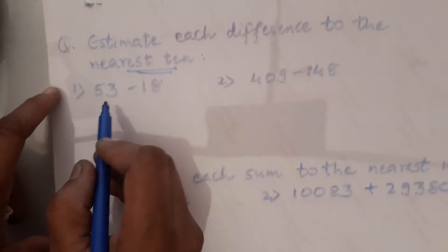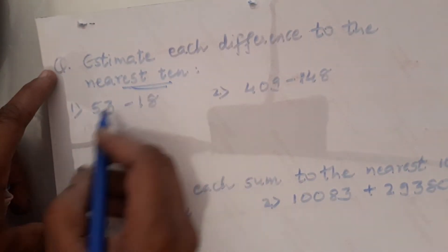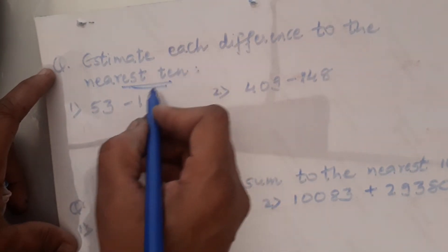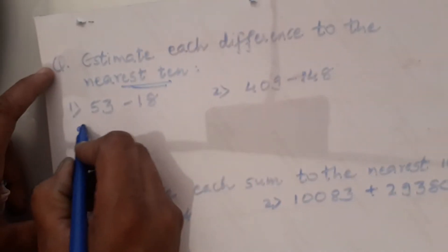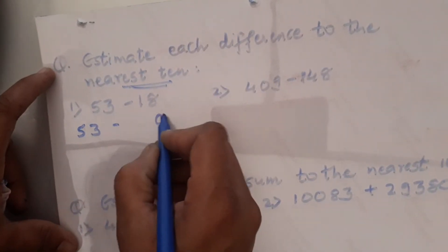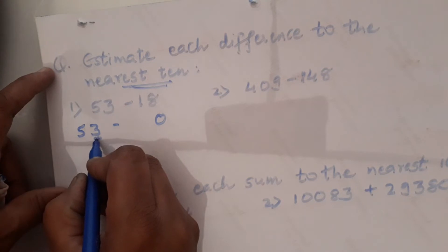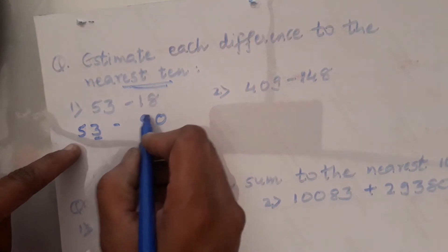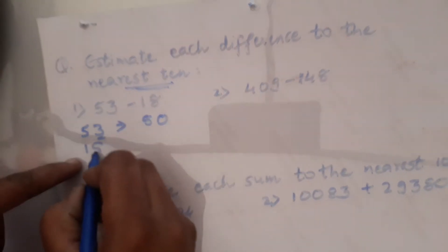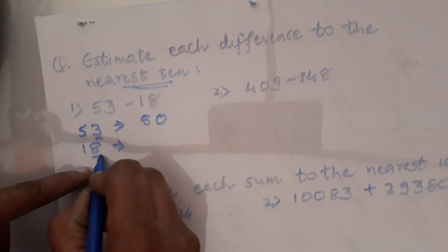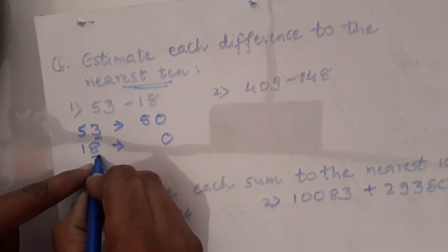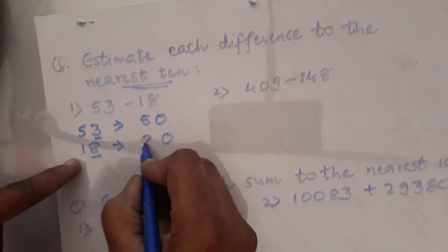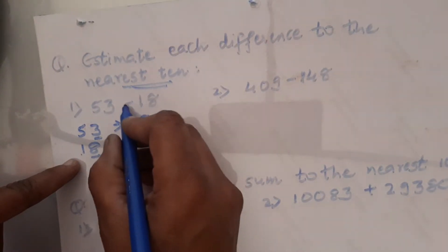Let us go with the first example — nearest tens. 53 rounded off to the nearest tens: in tens there is 1 zero, so 1 digit is underlined. The underlined digit must be greater than or equal to 5 — here it is not, so 5 remains 5. Now 18 rounded to the nearest tens: 8 is greater than 5, so we add 1 to the previous digit — 1 plus 1 is 2. Go for the subtraction.